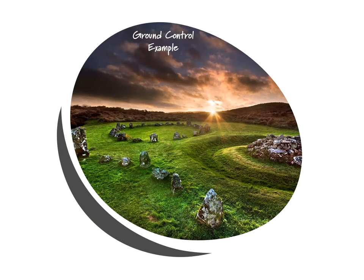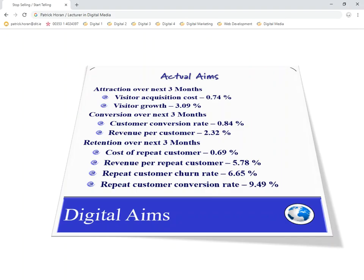Going back to Ground Control's example of what their aims were — attraction, conversion, retention. You can see they're very specific: visitor acquisition costs changing by 0.74%, visitor growth, and so on. Unfortunately, these are digital aims but it's very difficult to come up with these actual figures the first time you do it. You'll only start to see what's realistic and achievable when you do it the second, third, or fourth time.